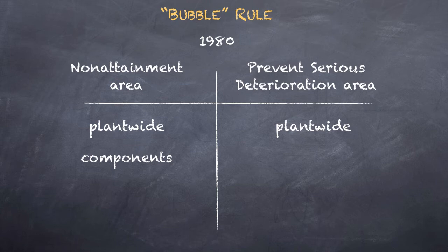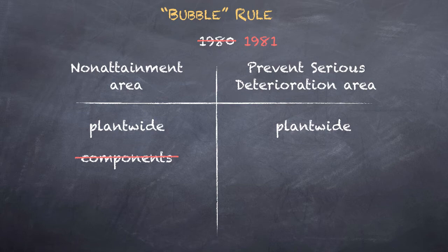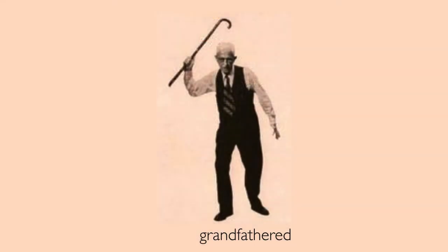Permitting was stricter in the non-attainment areas. The 1980 bubble rule defined 'stationary source' this way: in PSD areas the term applied plant-wide, but in non-attainment areas the term applied both plant-wide to the bubble and to components within the bubble — so in non-attainment areas a permit would be required to replace major emitting components, and the permit would only allow replacement with the cleanest available technology. In 1981, the Reagan EPA revised the rule so that in non-attainment areas, dirty technology could be replaced with equally dirty technology; a permit was not required because the amount of pollution escaping from the plant-wide bubble would be unchanged. In effect, the 1981 revised bubble rule grandfathered in older technologies in non-attainment areas.